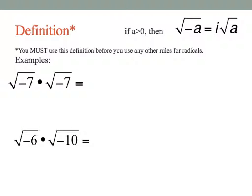Let's look at some definitions. Whenever you have a square root of a negative number, you bring an i out in front, basically factoring out an i. So in other words, the square root of negative 3 is equal to i times the square root of positive 3 — the 3 becomes positive.